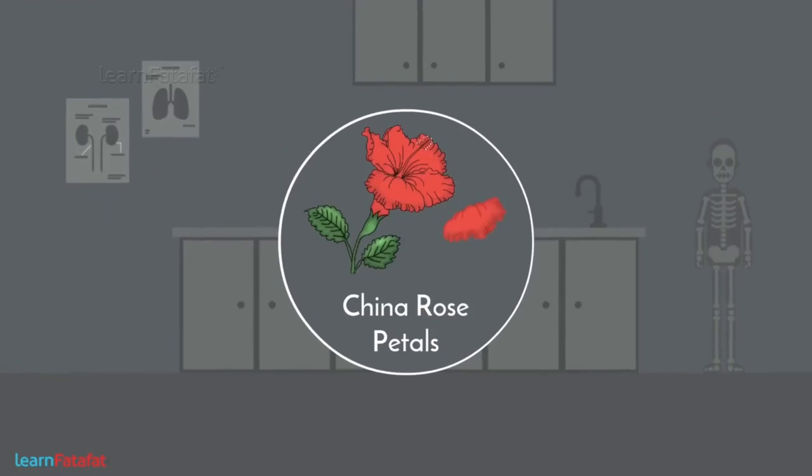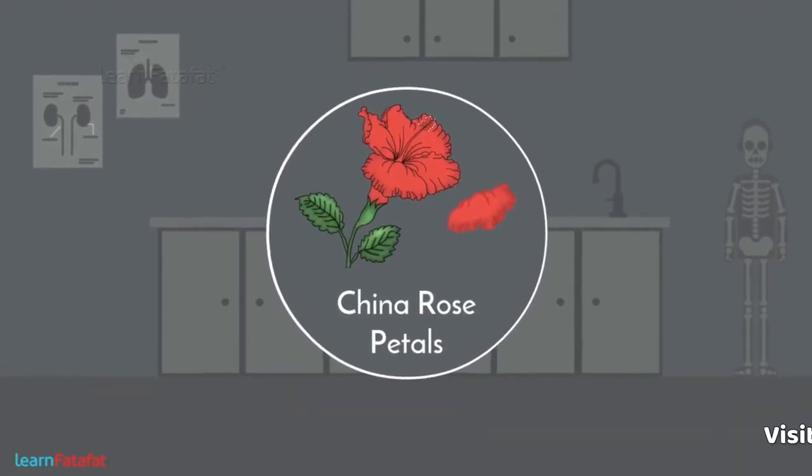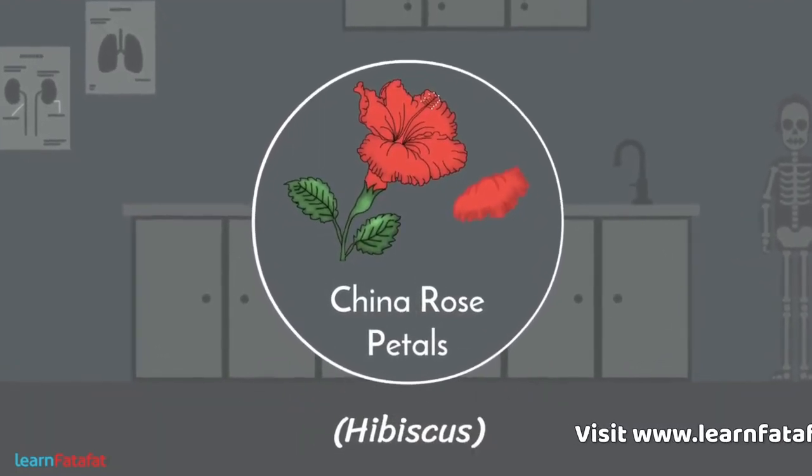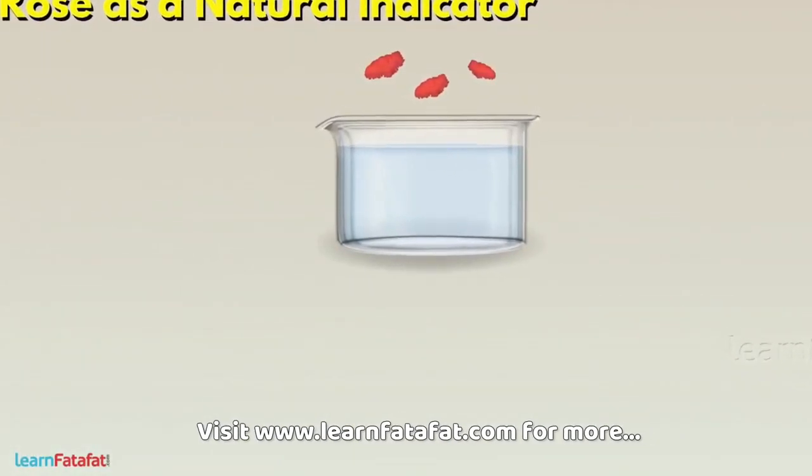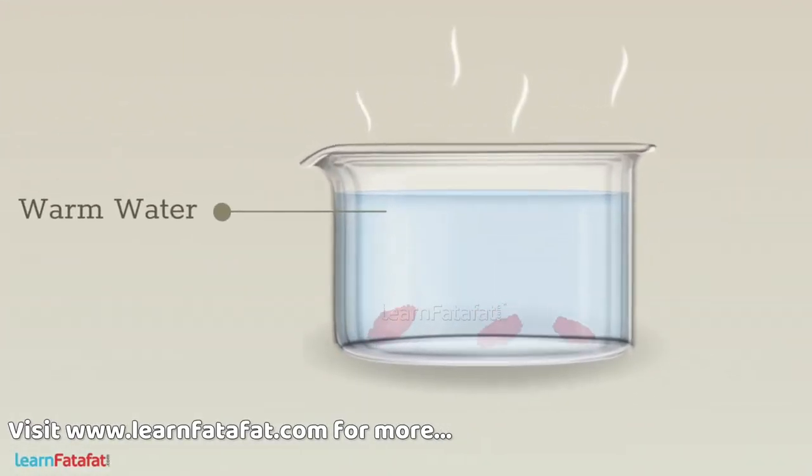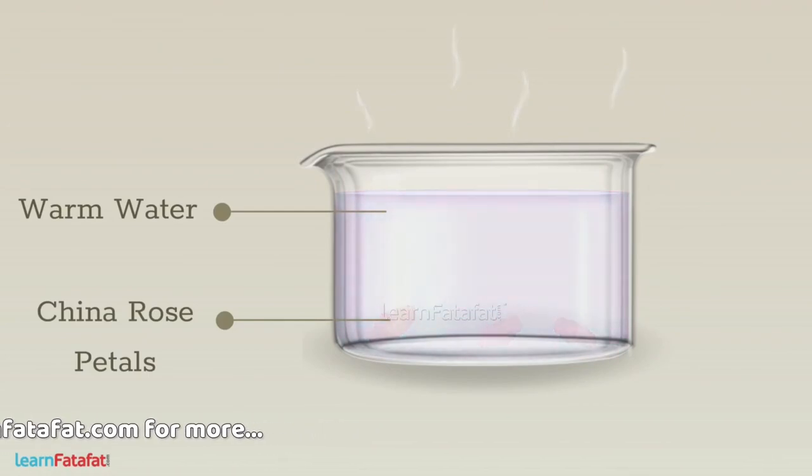Let's learn how we can use china rose, also called hibiscus, as an indicator. Take some china rose petals and mix them in warm water, which will cause the water to become colored. We can use this colored water to check if a solution is acid or base.